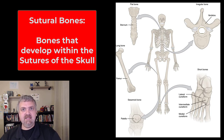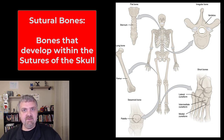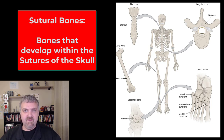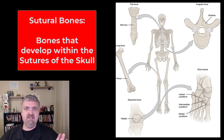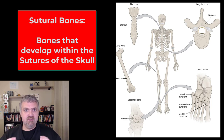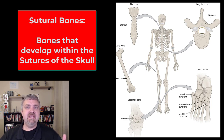So to recap: long bones — think arms and legs; flat bones — think skull and thoracic cage; irregular bones — vertebrae and pelvis; short bones — think wrists and ankle bones; sesamoid bone — the patella is the only one I'll ask you to know; and sutural bones are bones that can develop inside a suture. Those are the six major bone shapes.